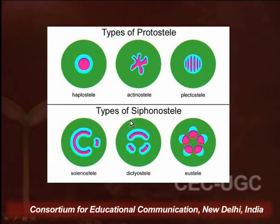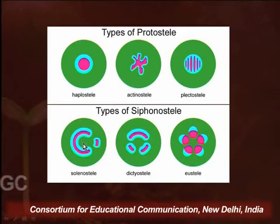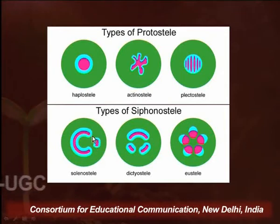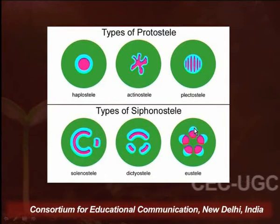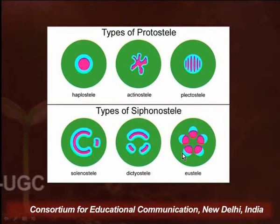In the siphonostele, there is a universal presence of pith. In the center of the stem lie parenchymatous tissues termed pith tissues, surrounded by xylem and phloem. These xylem and phloem tissues can be arranged in a circle or found in patches. Examples found in pteridophytes include the solenostele, dictyostele, and eustele.